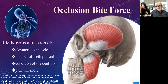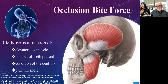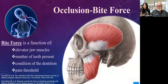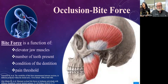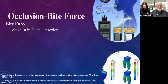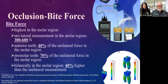This is why we need an objective tool to measure bite force rather than assuming based on clinical appearance. When looking at numbers: unilateral posterior measurements typically range from 300 to 600 Newtons. Anterior teeth generate about 40% of that unilateral force, premolar teeth about 70%. Bilateral molar measurements are typically about 40% higher than unilateral. If a patient has no posterior occlusion and all forces concentrate anteriorly, the anterior teeth are not designed for those forces.